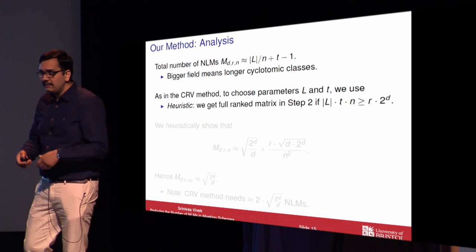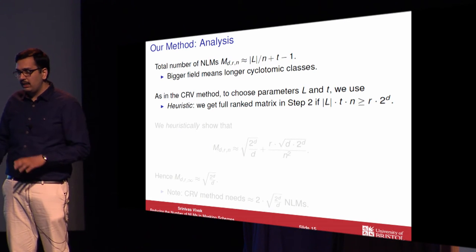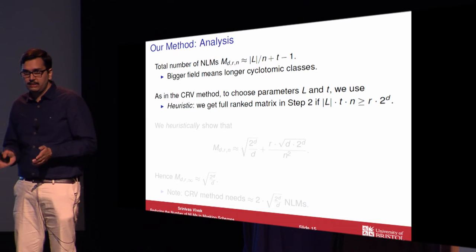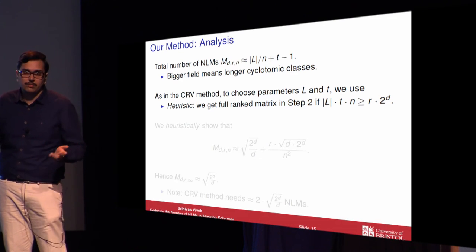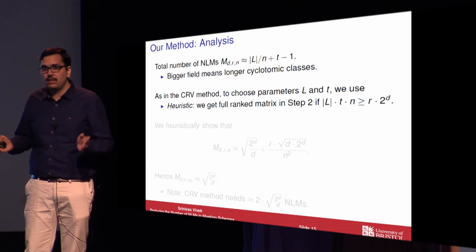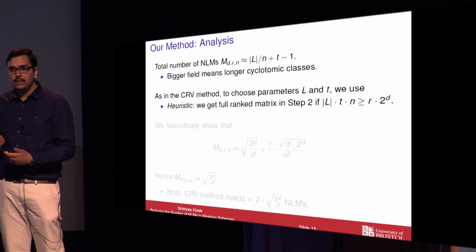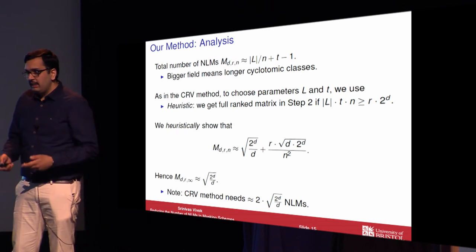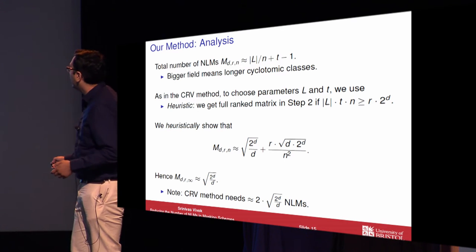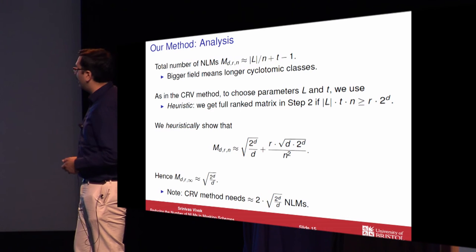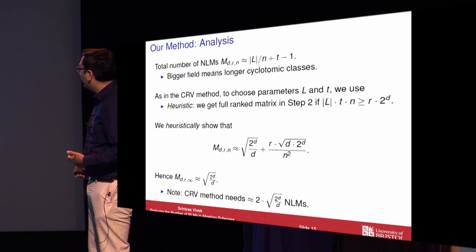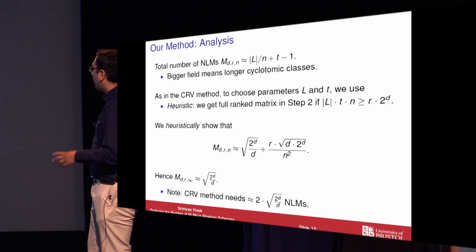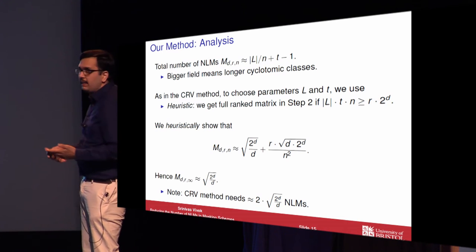To determine the parameters L and T, as in the CRV method we use the heuristic that the matrix in the decomposition step has full rank, and we will be able to obtain a decomposition for any S-box if the number of columns exceeds the number of rows. This is just a heuristic — it works well in practice, but we do not know how to prove it rigorously. The heuristic analysis shows that the complexity of the improved method is, in the limiting case, square root of 2 power D over D, which is half that of the CRV method. Again, this analysis is only heuristic.